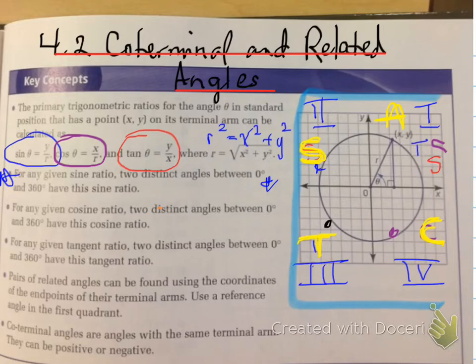The other statements are true for cosine and tangent. Pairs of related angles can be found using the coordinates of the endpoints of their terminal arms. Use a reference angle in the first quadrant. Coterminal angles are angles with the same terminal arm and can be positive or negative.